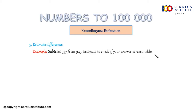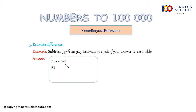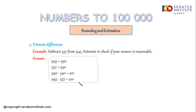Same as before with estimate sums, we have to round each number to the nearest tens first. So 945 becomes 950 and 537 becomes 540. Then 950 minus 540 equals 410. This means 945 minus 537 is approximately equal to 410.